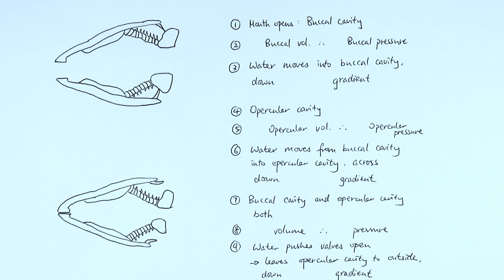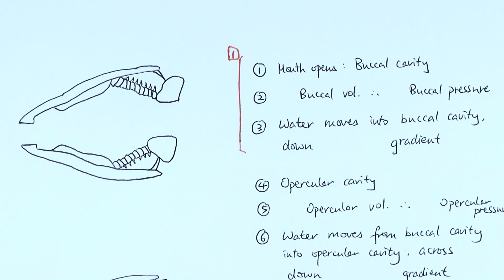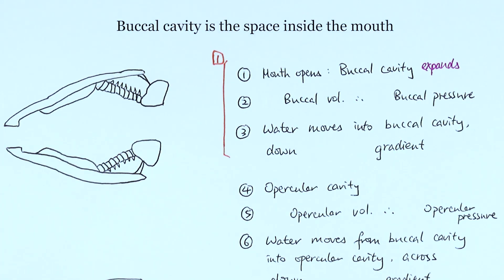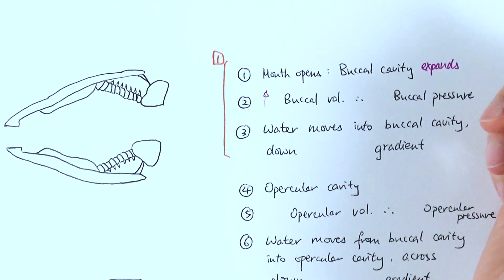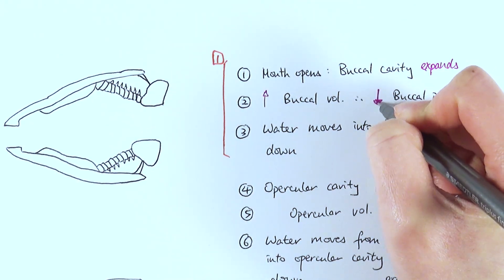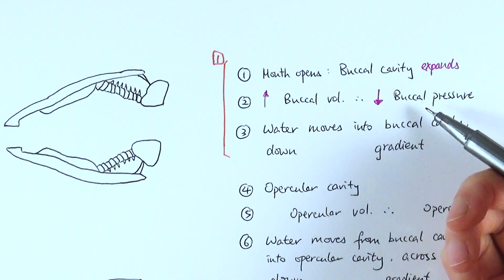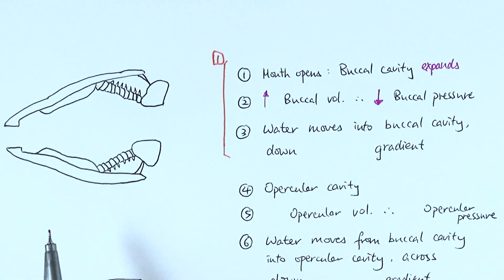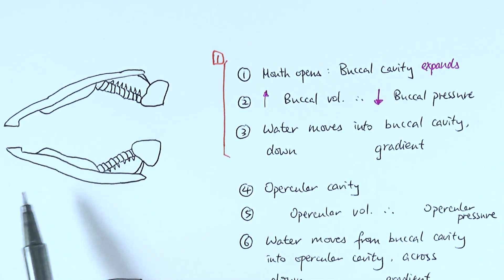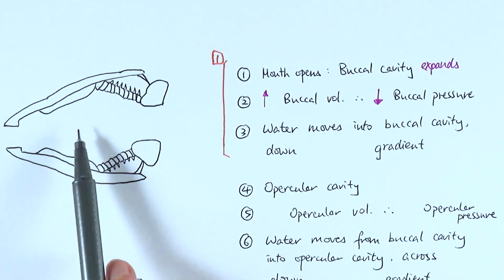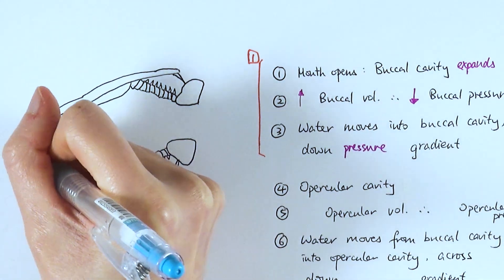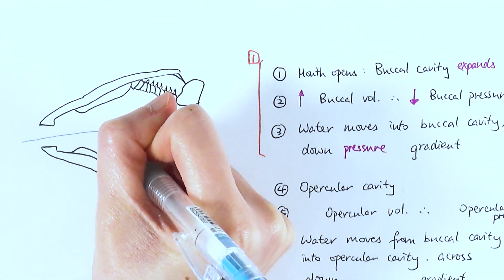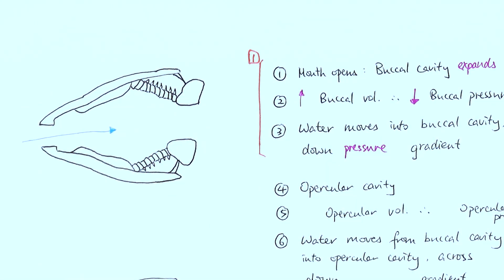We can separate the breathing process into three different stages. In the first stage, the mouth opens and the buccal cavity expands, increasing in volume and therefore decreasing in pressure. Because the buccal cavity pressure is now lower than the outside, water moves from the surrounding area — for example a lake — into the buccal cavity, down the pressure gradient. So step one is simply water flowing into the mouth and buccal cavity.